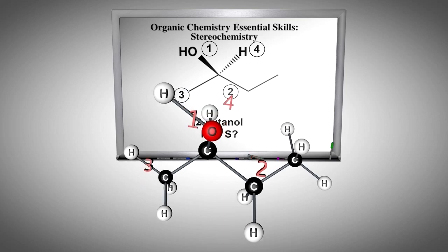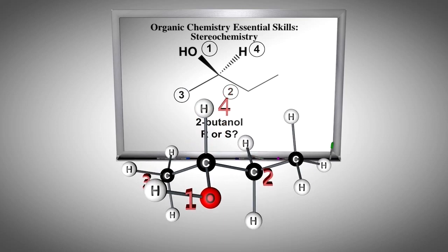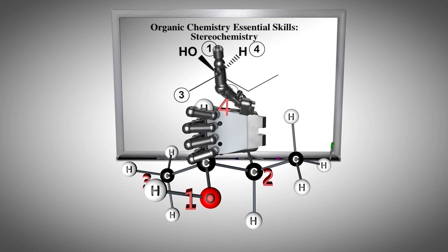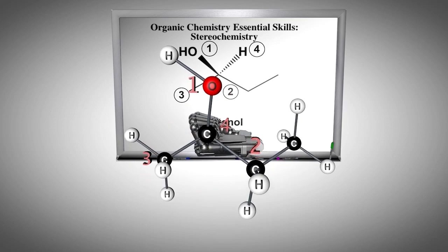Alternatively, if we use the hand method, we see that the fingers will curl in the direction from highest priority to lowest priority for only the right hand, which matches the stereochemical modifier R.